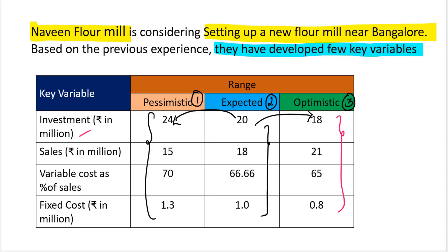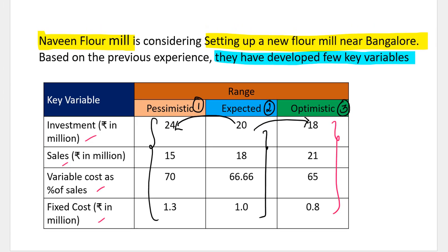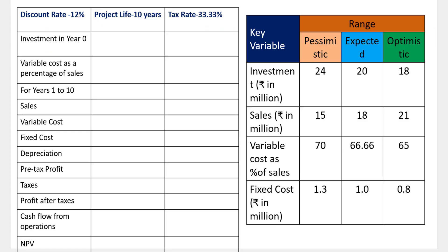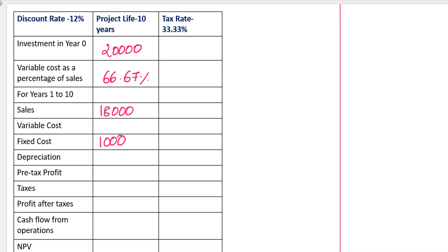All the key variables are given in millions — investment, sales, variable cost, and fixed cost. For easy calculation, I am going to take them in thousands and convert later. In order to calculate the net present value, I need all this information. I am going to load these variables into the table. At the first level, we are going to talk about the expected scenario, taking investment, sales, variable cost percentage, and fixed cost percentage.